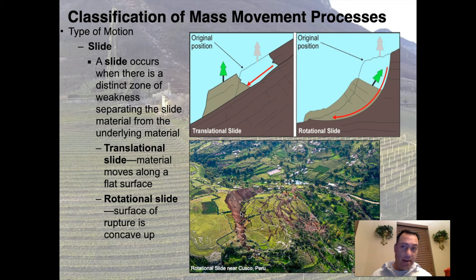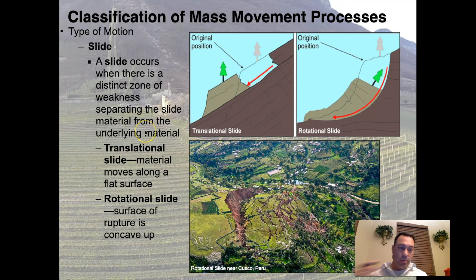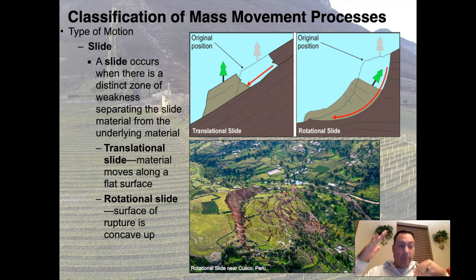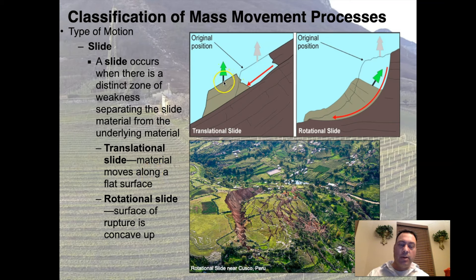Rather than a fall, the next type of motion is a slide. A slide occurs when there is a distinct zone of weakness separating the sliding material from the underlying material — they remain in contact with one another as they move, unlike a rock fall where there is actual air between them. There are two kinds: a translational slide, where the material moves along a flat surface, and a rotational slide.